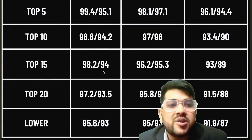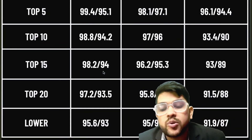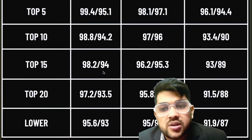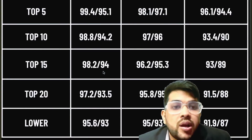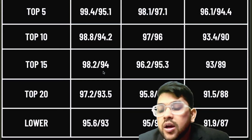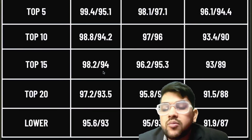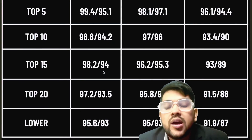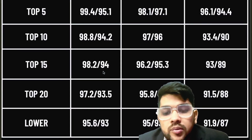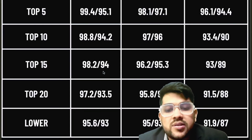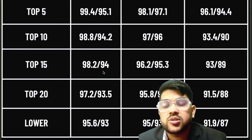For any NIT (lower NITs), CS requires 95.6 percentile — these figures are exclusively for the EWS category. For lower NIT non-CS branches: 93 percentile. For IIIT: 95.9 and 93. For GFTI: 91.9 and 87 percentile. These cover the full range of EWS category cutoff information.